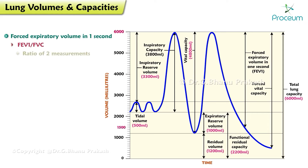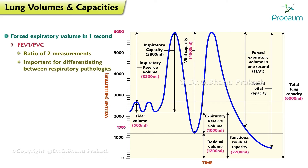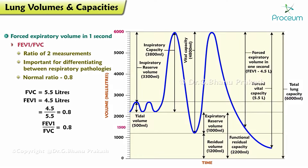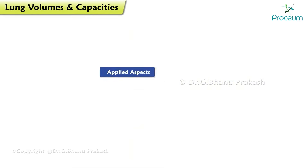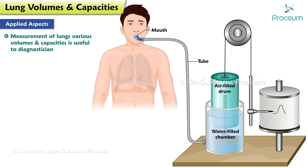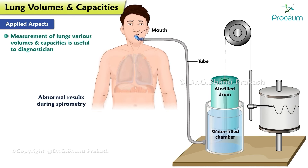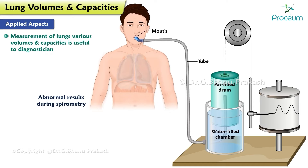FEV1/FVC is a ratio of the two measurements and is important for differentiating between respiratory pathologies. A normal ratio is 0.8. For example: FVC equals 5.5 liters, FEV1 equals 4.5 liters, giving an FEV1/FVC ratio of 0.8. Measurement of the lungs' various volumes and capacities is useful to the diagnostician. Two general categories of respiratory dysfunction yield abnormal results during spirometry: obstructive lung disease and restrictive lung disease.